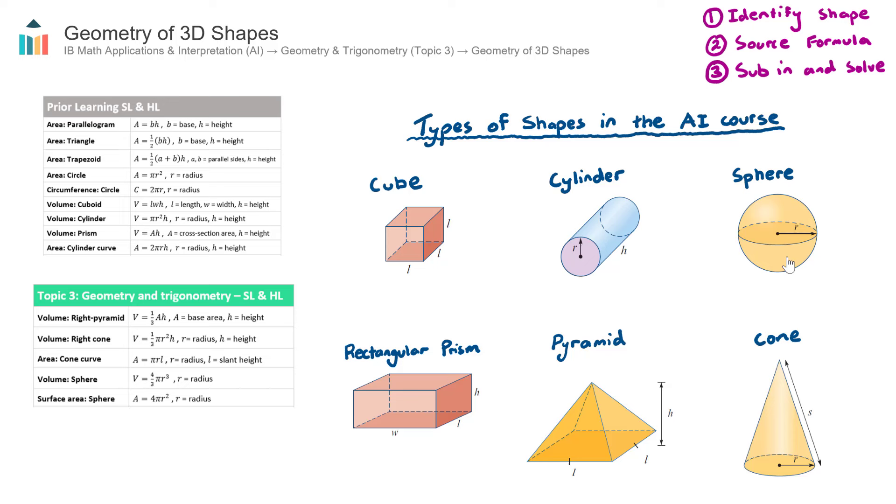So in summary, the general process for these questions is to identify the shape on your page, go and source the formula from the AI formula booklet, and then substitute those values in and solve.